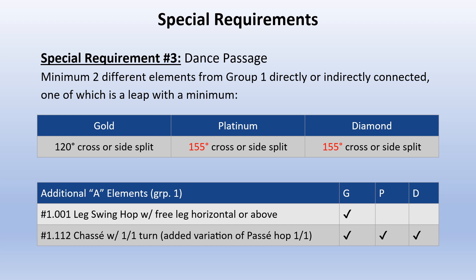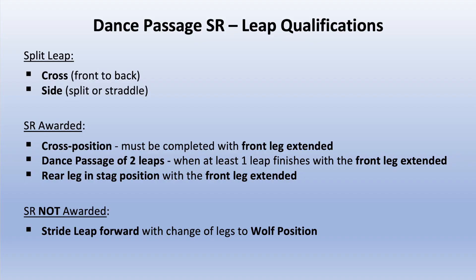Special Requirement 3 is a dance passage with a minimum of 2 different elements from Group 1, directly or indirectly connected, one of which is a leap with a minimum of 120 degrees cross or side split for Gold, and 155 degrees cross or side split for Platinum and Diamond. Additional elements from Group 1 that receive a value part include a leg swing hop with the free leg at horizontal or above for Gold, and a chassé with a full turn — an added variation of the passé hop full — for Gold, Platinum, and Diamond. Leap qualifications follow.